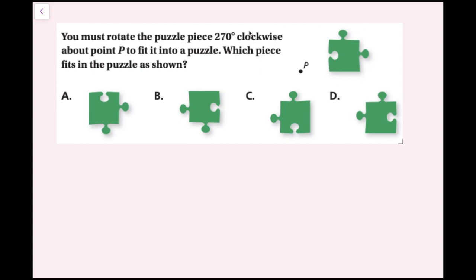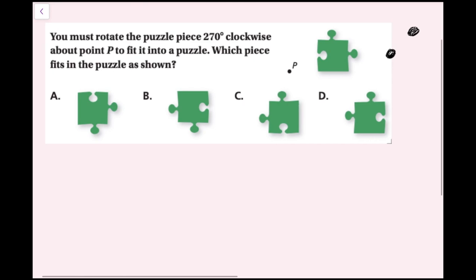Clockwise goes from top to right. We can convert 270 degrees clockwise into 90 degrees counterclockwise. Going clockwise: 90, 180, 270 — the top piece ends up on the side, the side piece ends up at the top, and the indented part ends up at the bottom. So I'm looking for a puzzle piece with a bump on the side, a piece at the top, and an indented part at the bottom.